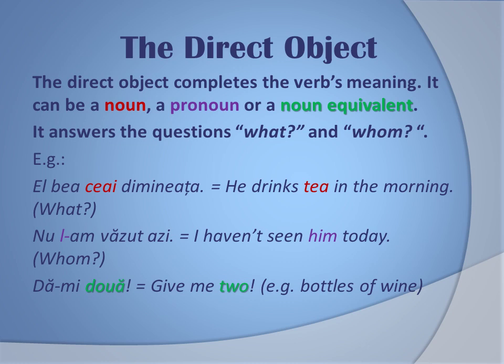Another example: 'nu l-am văzut azi' — I haven't seen him today. The 'l' is a shortened version of the pronoun 'el', meaning him, and it answers the question 'whom'. And with a noun equivalent: 'dă-mi două', give me two — as in 'dă-mi două sticle de vin', give me two bottles of wine. Again it answers the question 'what'.